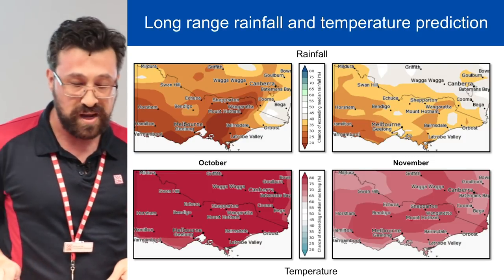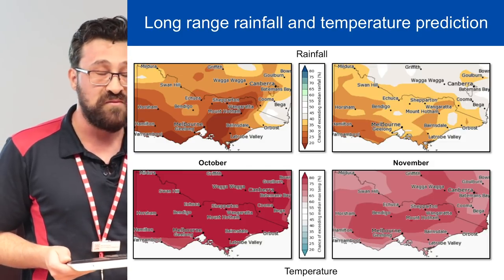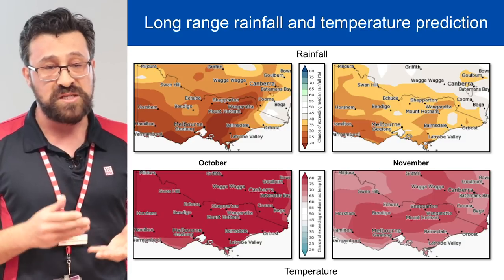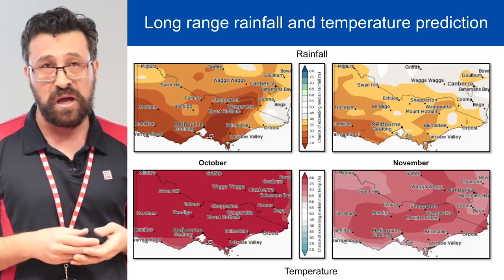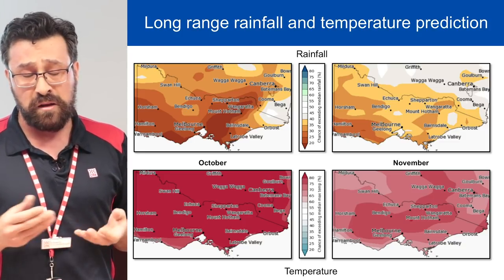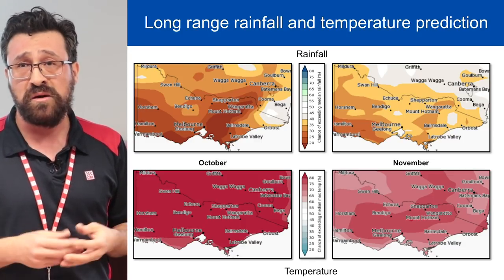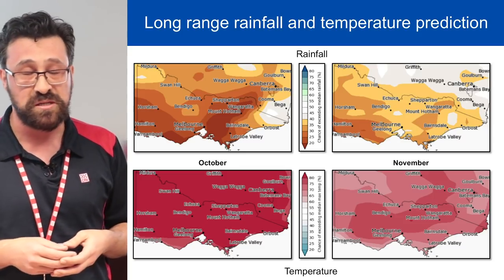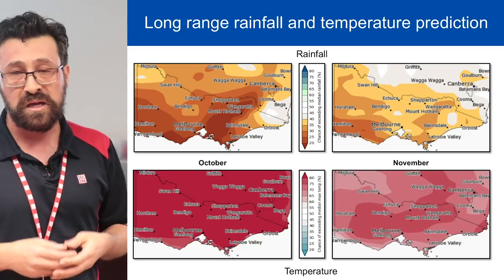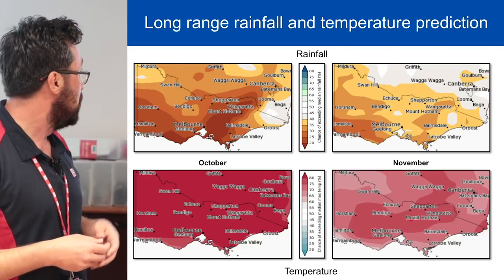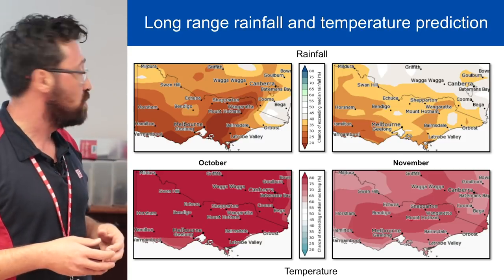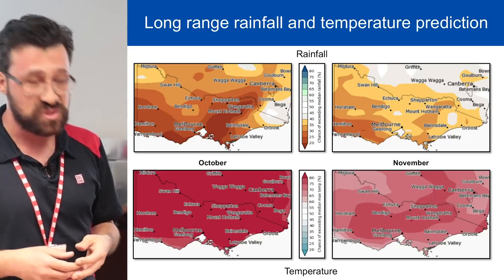Looking at long-range temperature and rainfall patterns from the Bureau of Meteorology, the forecast is for higher than average daytime temperatures over October and November, with quite high model confidence. In terms of rainfall, during October where model confidence is high, much drier conditions are forecast throughout Victoria, especially over the southwest and central highlands. This is a further cause for concern over the Otways and central highlands, especially if these drying trends continue.